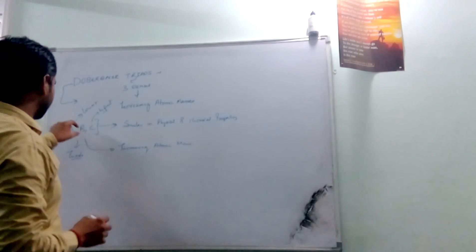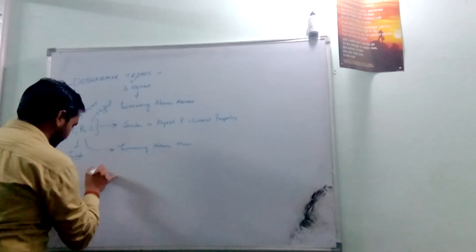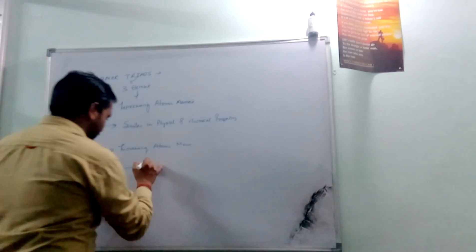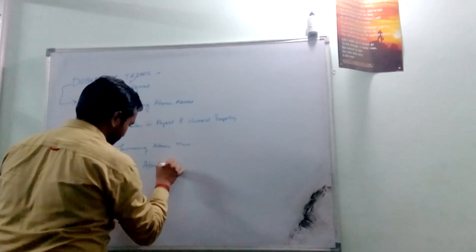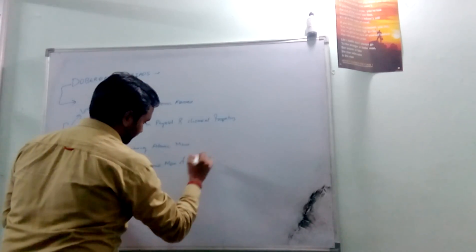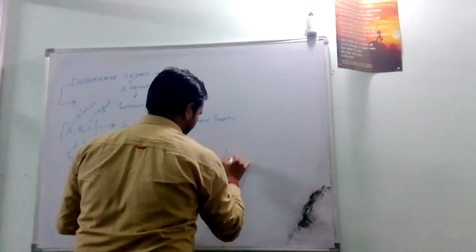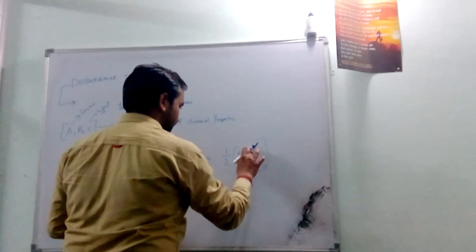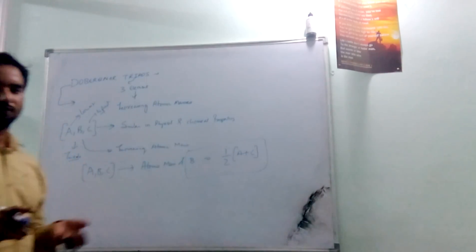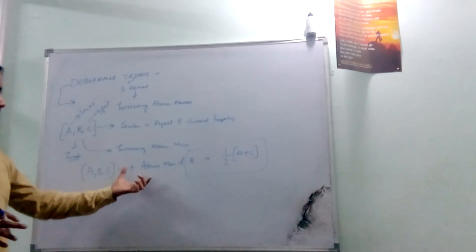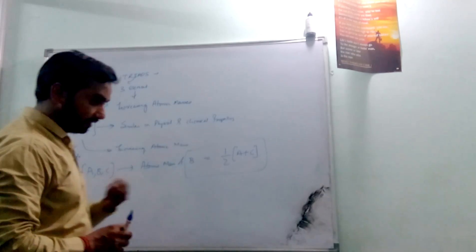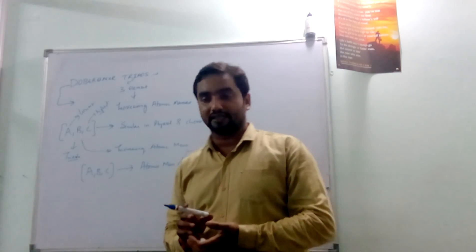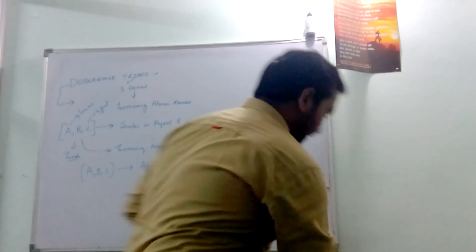Dobereiner stated that the center element B of the triad A, B, C has an atomic mass equal to the average or mean of the other two elements A and C. This formula given by Dobereiner was the first method to classify different elements or groups of elements in a similar manner depending on their physical and chemical properties.